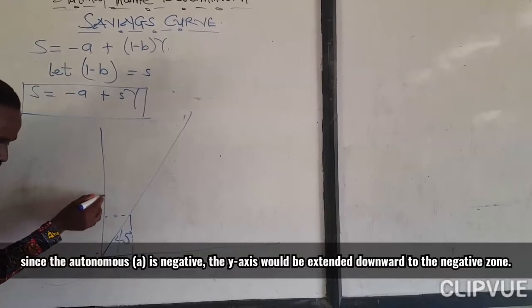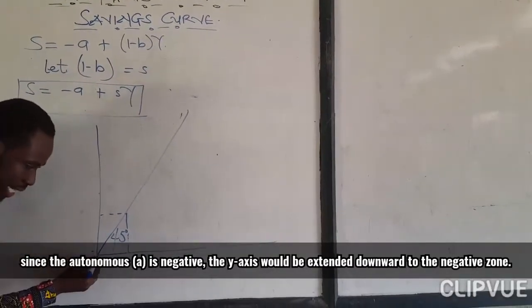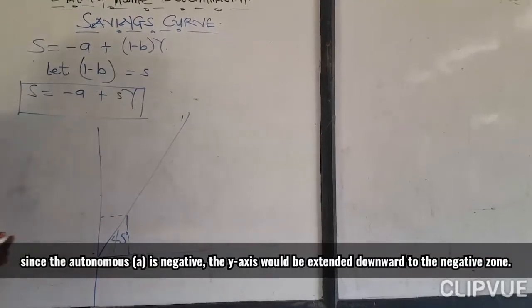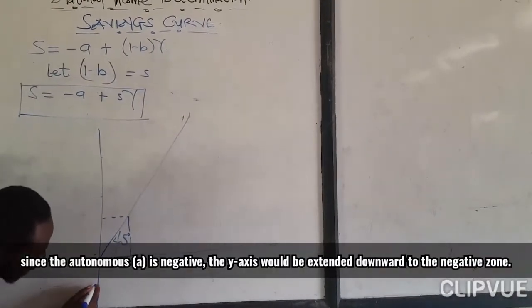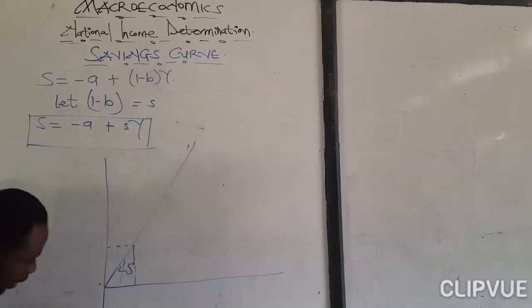So it is not going to be here like the consumption curve. It is going to come to the negative zone. This is the Cartesian plane. So it will come to the negative zone, somewhere in here, negative a.